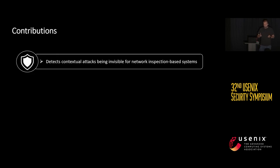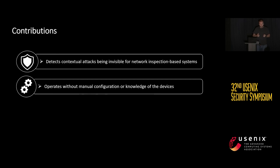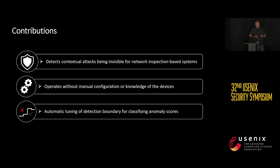To overcome these shortcomings, we developed Argus, which detects contextual attacks that are indistinguishable from benign actions just by looking at the network traffic. For this, we model the benign behavior of the smart home using a neural network, train it on how the home behaves benignly, and this allows it to analyze state changes of IoT devices without any manual configuration or knowledge of the devices. The neural network then predicts an anomaly score that is automatically compared against a dynamically tuned threshold for deciding whether an action is an attack or benign.